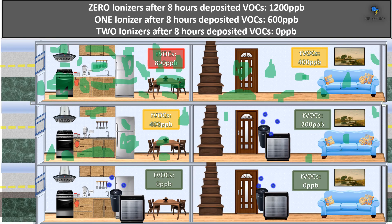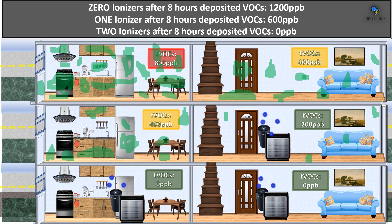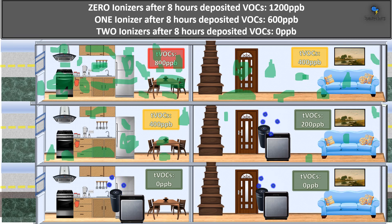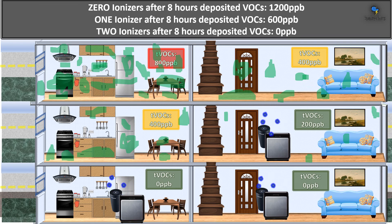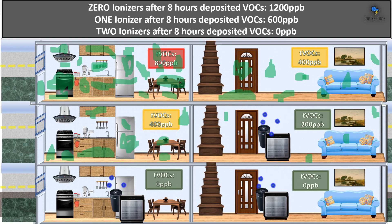Here we have three scenes of VOCs inside a home. The first scene is with no ionizers, the second with one ionizer, the third with two ionizers. The more air purifiers we own, the cleaner our air is. With no ionizers you'll have toxic air; with one ionizer your air quality is improved; with two, it's excellent. It's very important to realize the reason we want more devices is so we have less deposited VOC on our surfaces — it's not just about cleaning the air, but cleaning it quickly so it doesn't land on surfaces.